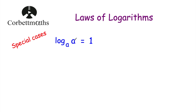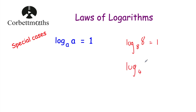In terms of the first one, log base a of a is equal to 1. Think about it — if a is the base, what power would you raise it by to get a? Well, a to the power of 1 gives a. For example, log base 8 of 8: what do we raise 8 by to get 8? Well, 8 to the power of 1 equals 8, so the answer is 1. Similarly, log base 4 of 4 — what power do you raise 4 by to get 4? That would be 1 as well. So if you have log base a of a, the answer will always be equal to 1.